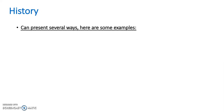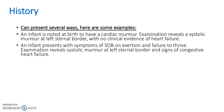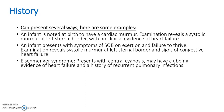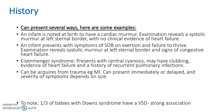Looking at clinical histories: an infant noted at birth to have a cardiac murmur, with examination revealing a systolic murmur at the left sternal border and no clinical evidence of heart failure. Or, an infant presenting with shortness of breath on exertion and failure to thrive, with signs of congestive heart failure. A history for Eisenmenger's syndrome includes central cyanosis, possible clubbing, evidence of heart failure, and recurrent pulmonary infections. VSD can also be acquired from trauma such as an MI. Notably, a third of babies with Down syndrome also have a VSD.